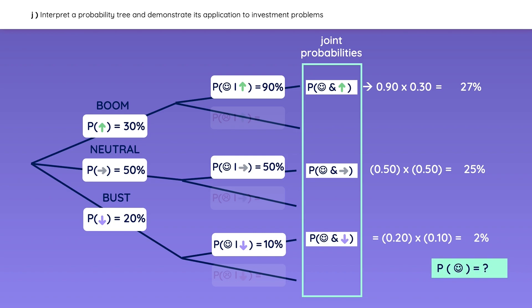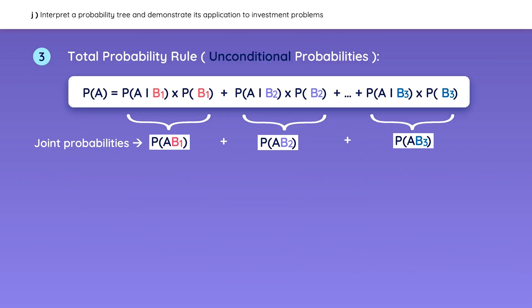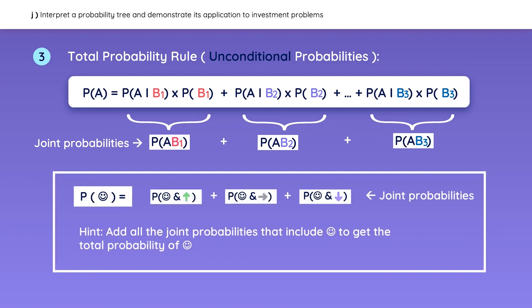What is the probability that our population will be happy? This is where the total probability rule comes in — it is the sum of all of the joint probabilities that include a happy population. So the answer should be 54%. That's why tree diagrams are useful: if you can draw a tree diagram, you can pretty much solve any probability problem without using formulas. Here is the total probability formula again, with the values from the tree diagram plugged in, confirming that the total probability rule is simply the sum of the joint probabilities.